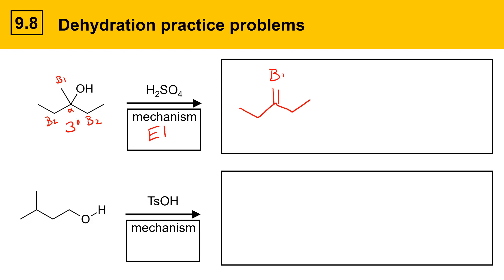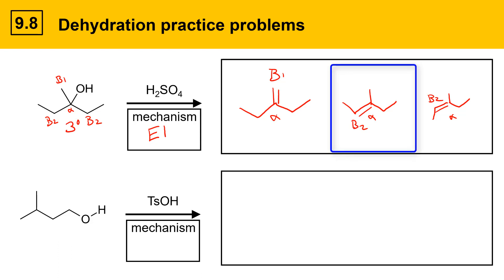The carbocation can then be deprotonated at either the beta 1 or one of the beta 2 positions. If beta 1 reacts, the double bond forms between beta 1 and the alpha position. Alternatively, a beta 2 position could be deprotonated, giving a product where the two methyl groups are cis, or another stereoisomer where the methyl and ethyl are cis. Based on Zaitsev's rule and alkene stability, the most highly substituted alkene — the trisubstituted one with less steric strain — would be the major product.